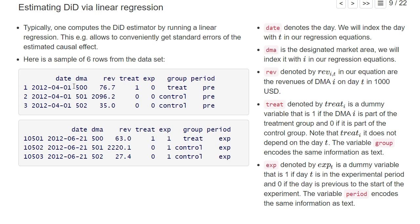Here I have six example rows. We have one row for each combination of day, specified by the day of travel, and DMA — the region for which we measure revenues in this column. Then we have two dummy columns. 'Treat' is equal to one if this particular DMA is in the treatment group — so DMA 500 is in the treatment group, and on every day for DMA 500 the treat variable is equal to one.